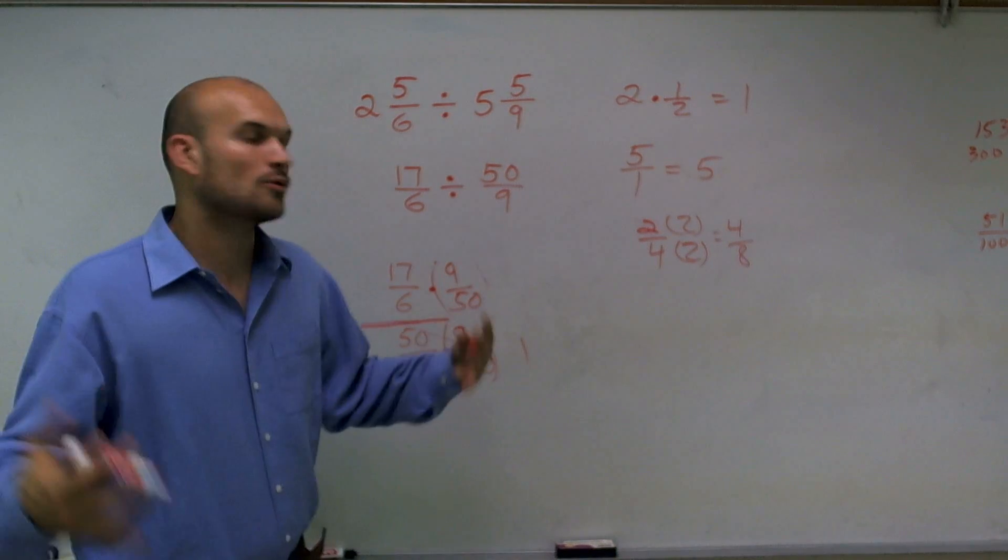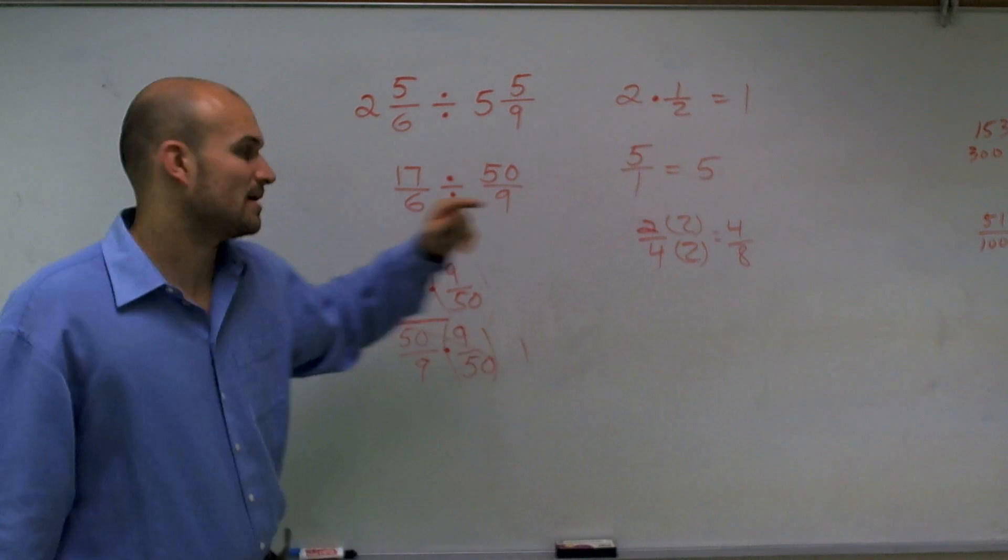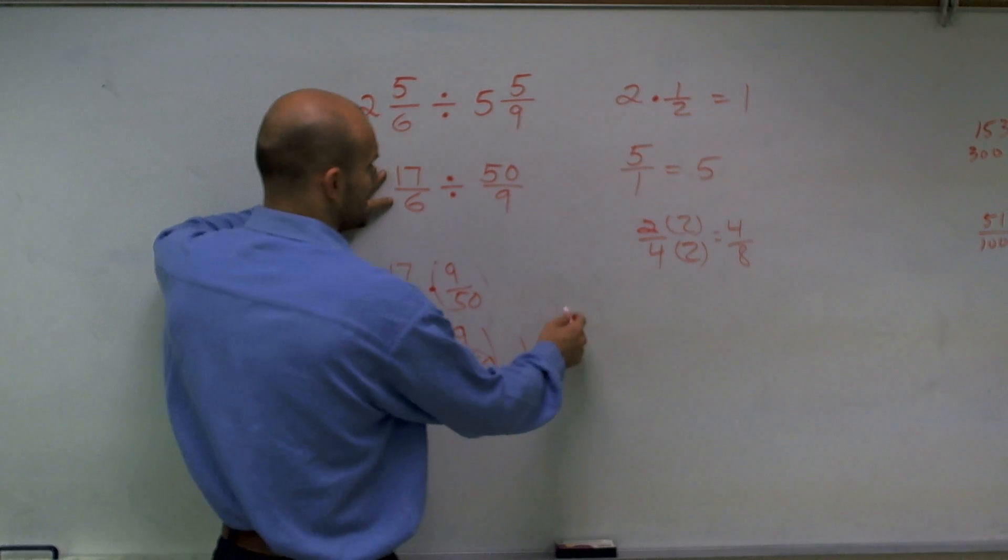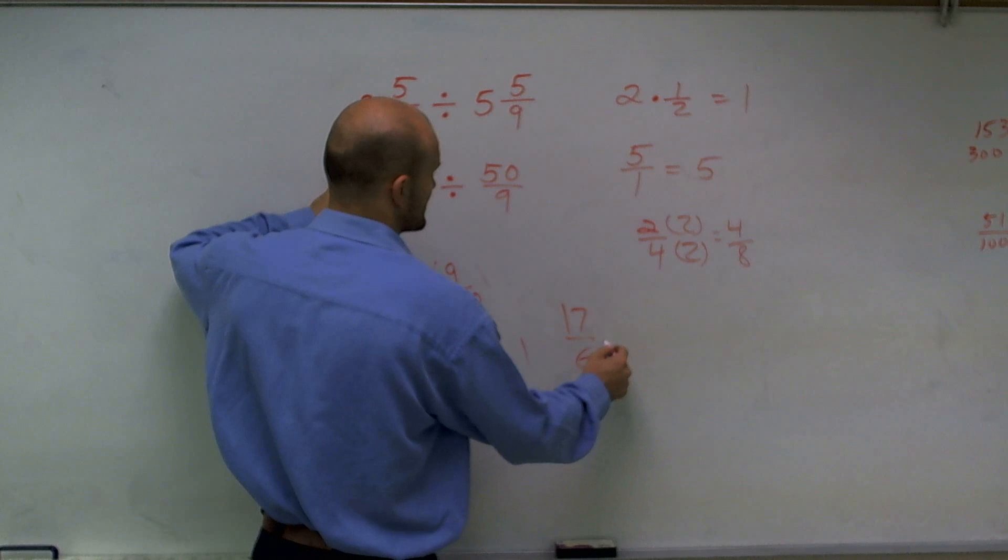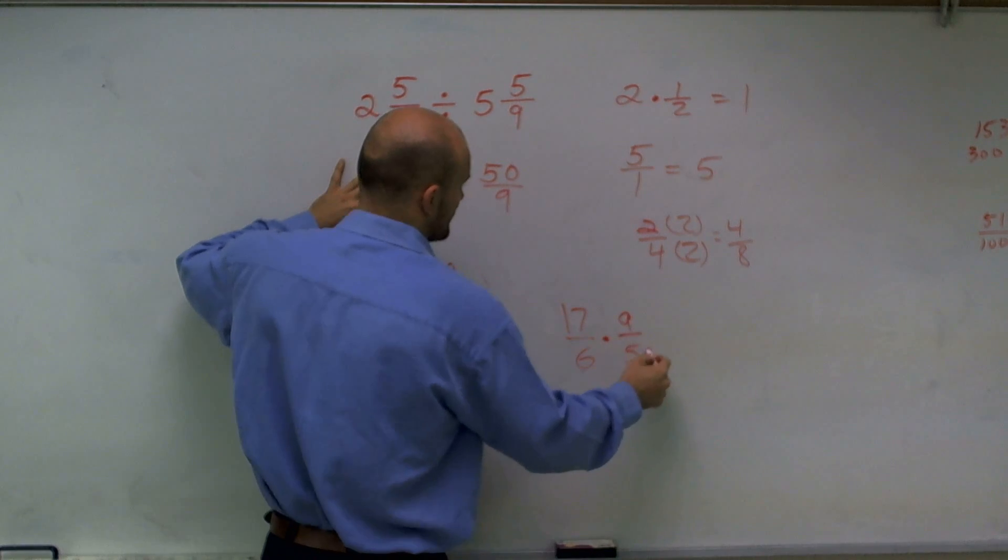And that's kind of the more formal rule that we look at when we say, hey, don't divide fractions, flip and multiply. So that's exactly what I need to do. 17/6 multiplied by the reciprocal of your divisor, which is 9/50.